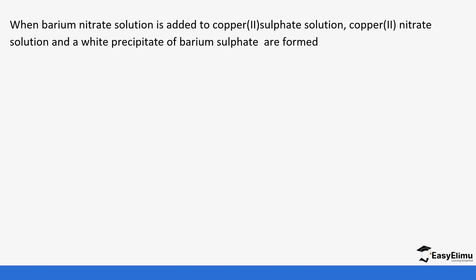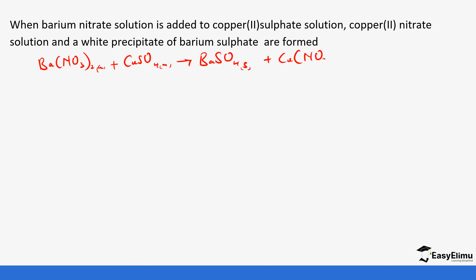Let's look at another example. When barium nitrate solution is added to copper sulfate solution, copper nitrate solution is formed and a white precipitate of barium sulfate is formed. The first step is to write the equation: barium nitrate — barium has a valency of two — reacts with copper sulfate. There is an interchange of anions, so we form barium sulfate, which is solid state (the white precipitate), plus copper nitrate — remember copper has a valency of two — which is aqueous.